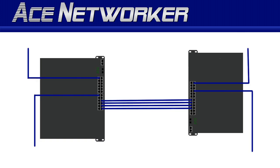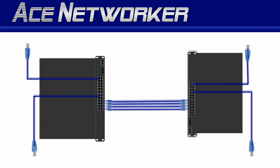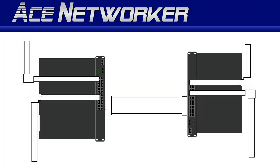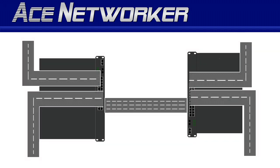First of all, understanding ether channels or link aggregations — they're sometimes called different things depending on the manufacturer of the devices and the company you're working for. They may be called ether channels, they may be called link aggregations. But understanding them requires you to think of a computer network like sophisticated plumbing, or looking at city traffic from about 5,000 feet up.